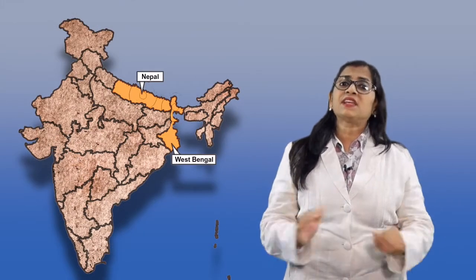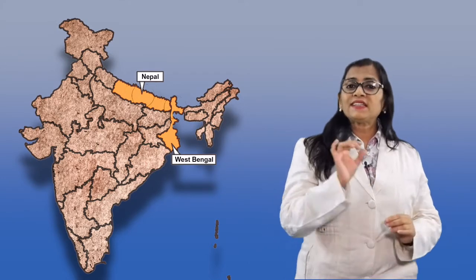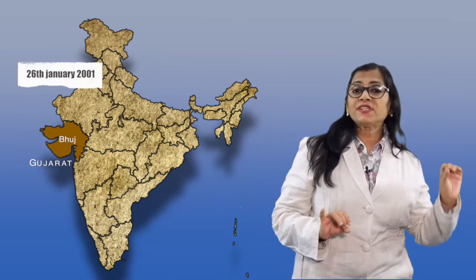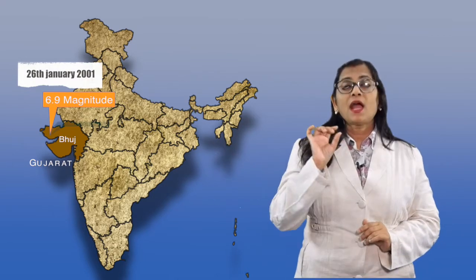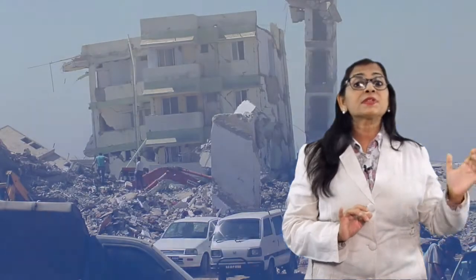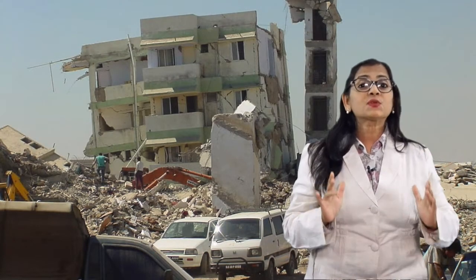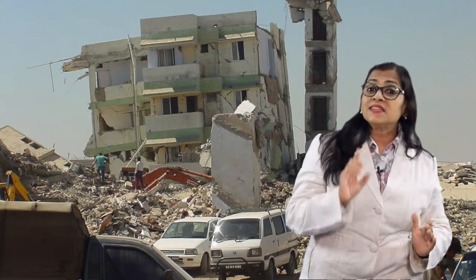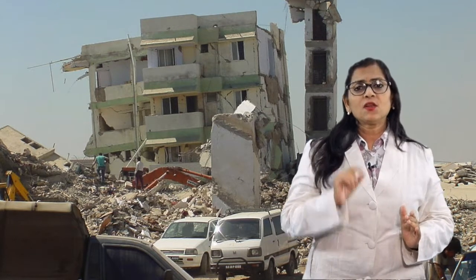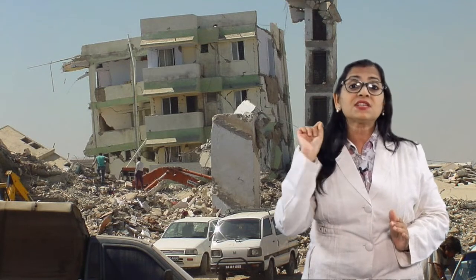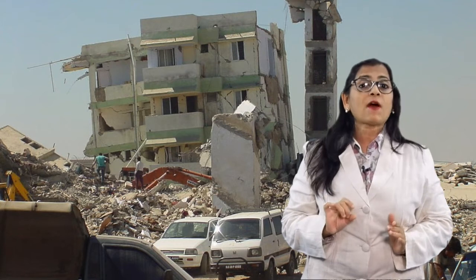The earthquake shook the entire state of Nepal as well as the northern states including West Bengal. If you look at the case study provided in your books, on the 26th of January 2001, an earthquake of 6.9 magnitude on the Richter scale struck the city of Bhuj in Kutch, Gujarat. It was Republic Day; students had gathered on the school campus. 917 students and 31 teachers lost their lives due to the collapse of the school building.